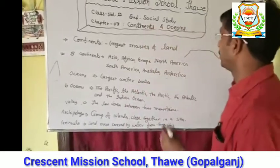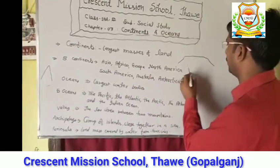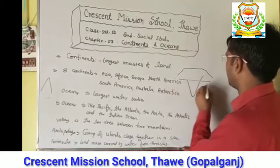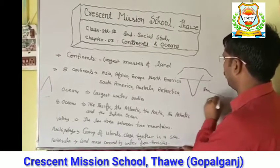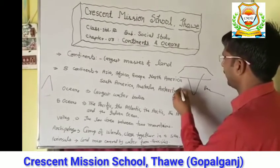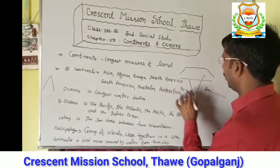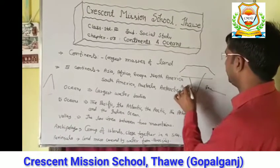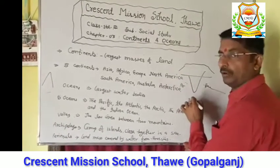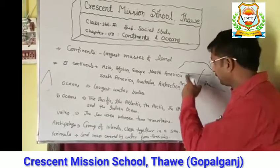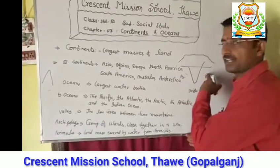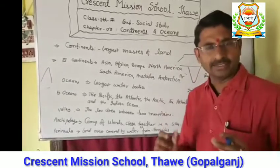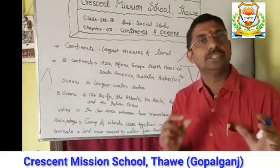When you think about the southern part of India, that structure is a peninsula — a land mass surrounded by water on three sides. In Hindi, this is called 'praedvip'. The southern part of India is a classic example of a peninsula.